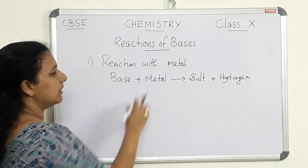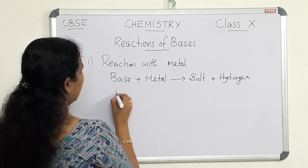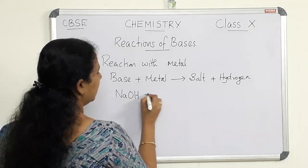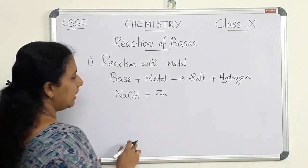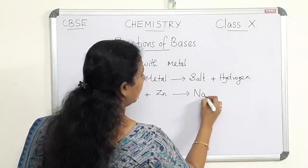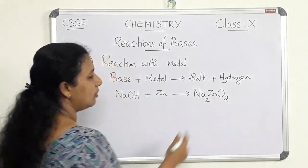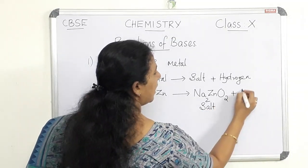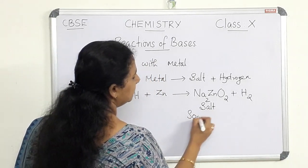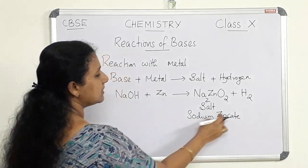In this case, base reacts with a metal and produces salt and hydrogen gas. Let us see one example. Sodium hydroxide — the common base — plus zinc metal. The corresponding salt formed is sodium zincate, with the formula Na₂ZnO₂. This is the formula of the salt. The salt's name is sodium zincate, and you have to study this name.